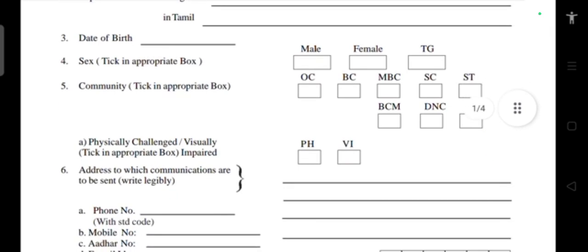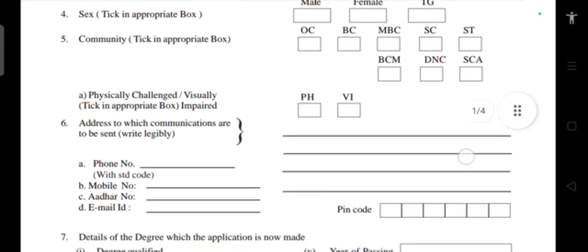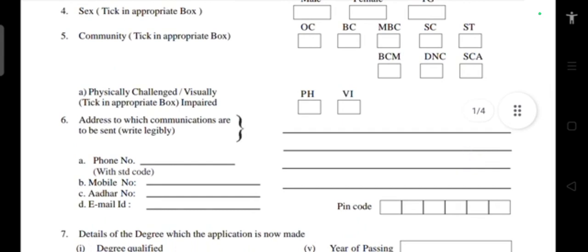For sex, tick the appropriate box — either male, female, or transgender (TG). For community details, tick the appropriate box: OC, BC, MBC, SC, ST, BCM, DNC, or SC — as per your community records. If you are physically challenged, tick the appropriate box.